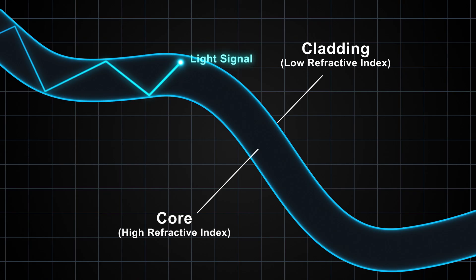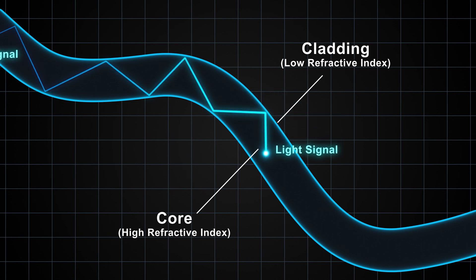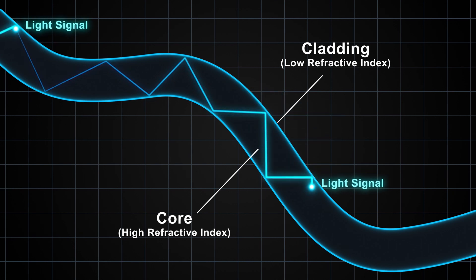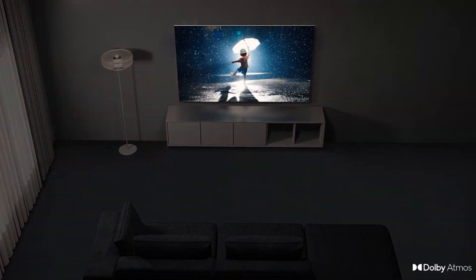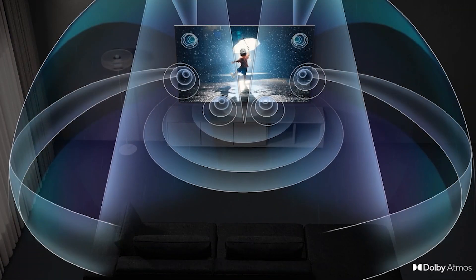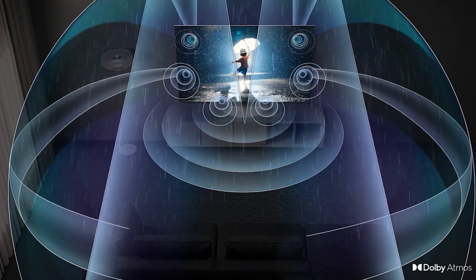When it comes to bandwidth between the two cables, eARC has a much higher bandwidth, which is the amount of data or range of frequencies that it can transfer at once. This allows eARC to support higher quality surround sound technologies and audio formats, such as Dolby Atmos or DTS.